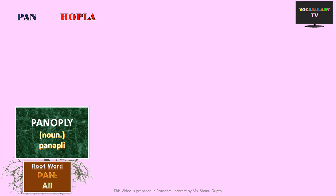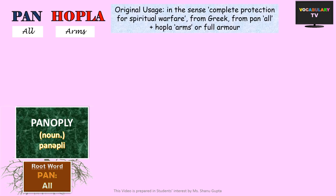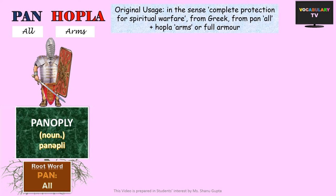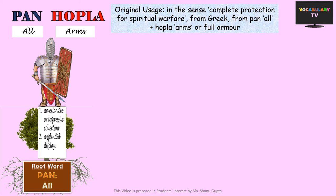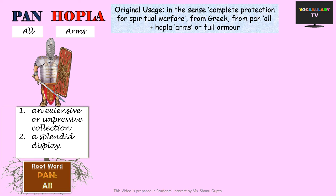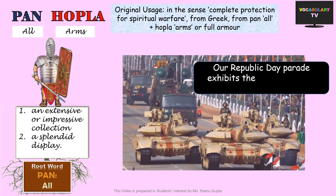The next word based on the root Pan is Panoply, made up of pan meaning 'all' and hopla meaning 'arms.' The word literally means 'all arms,' and originally referred to a full suit of armour with all weapons — a complete collection that might include shield, mask, etc. Nowadays it simply refers to any collection of people or things that is very large, extensive, and impressive. For example: Our Republic Day Parade exhibits the full panoply of India's military might.